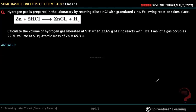Hello everyone! Hydrogen gas is prepared in the laboratory by reacting dilute SCL with granule zinc. The following reaction takes place: Zn plus 2 SCL gives ZnCl2 plus H2. Calculate the volume of hydrogen gas liberated at STP when 32.65 grams of zinc reacted with SCL.